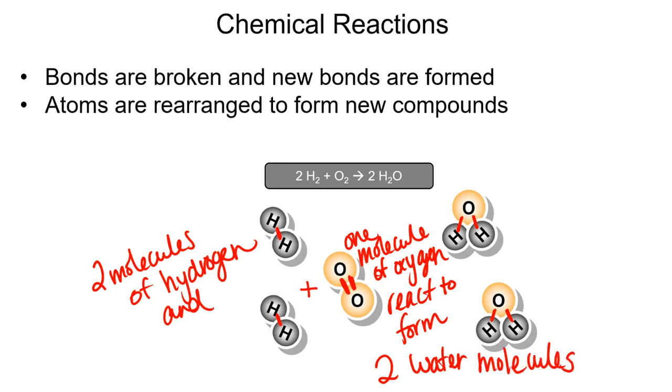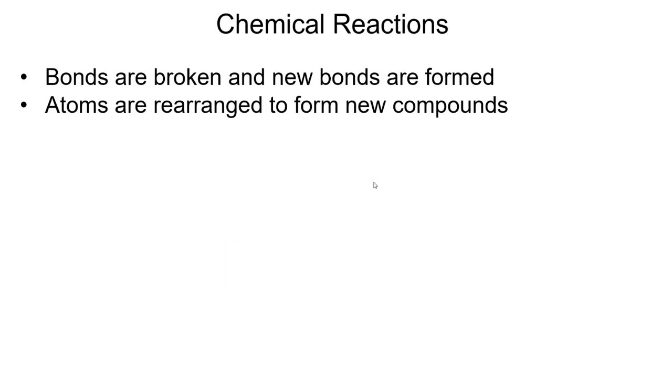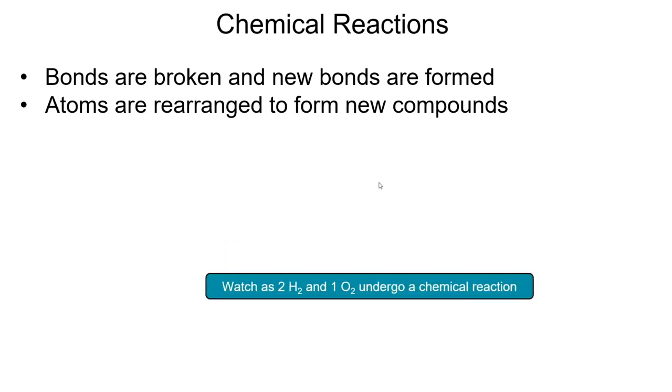So we know that that's what our chemical equation means at the molecular level. Two molecules of hydrogen, one molecule of oxygen makes two molecules of water. So we can watch and see what this looks like.